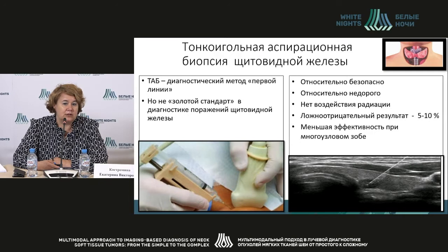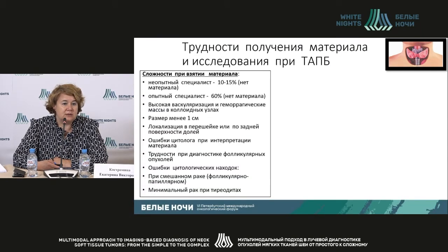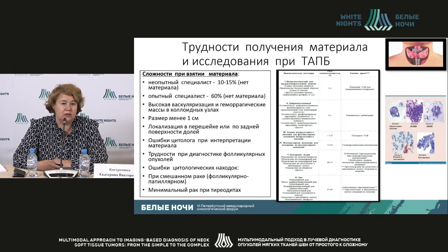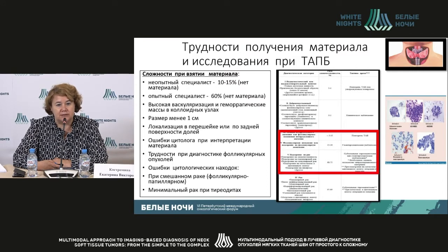FNA is now not just a standard of diagnosis but the primary part of diagnosis. It is relatively safe, involves no radiation, and is inexpensive; however, there may be false negative results and it is not very efficient if the goiter has many nodes. FNA is also difficult in cases of small nodes or anterior location, follicular tumors, mixed cancer, or minimum cancer.